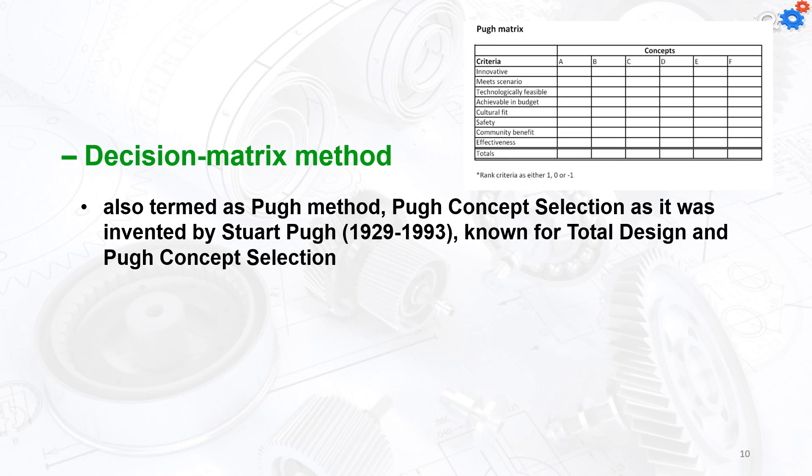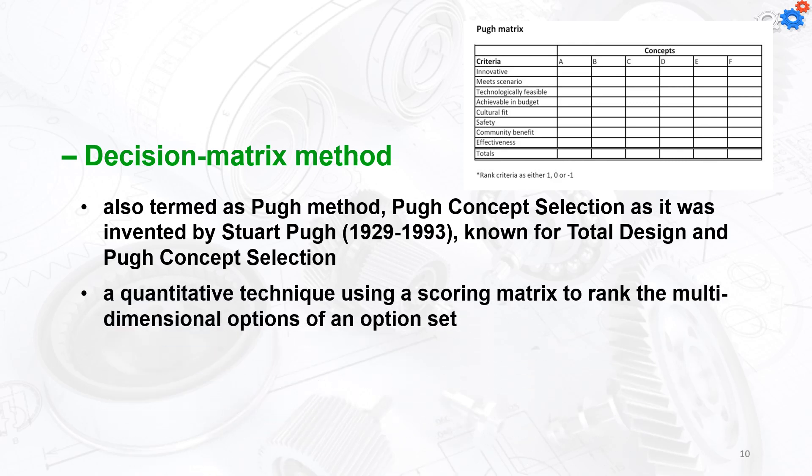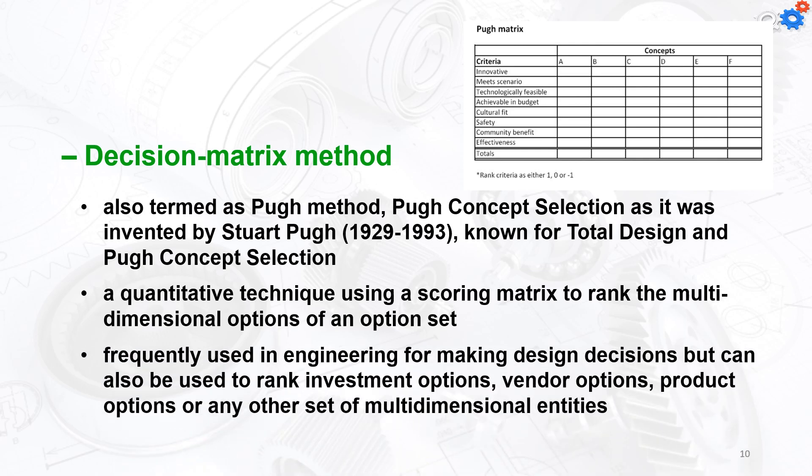The decision matrix method is also termed the Pugh method, as it was invented by Steve Pugh and is known for total design. It's a quantitative technique using a scoring matrix to rank multi-dimensional options of an option set. Frequently used in engineering for making design decisions, but can also be used to rank investment options, vendor options, product options, or any other set of multi-dimensional entities.